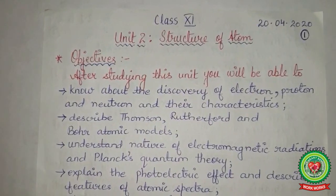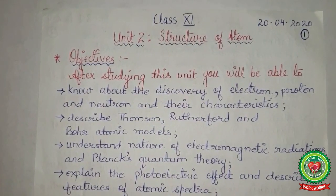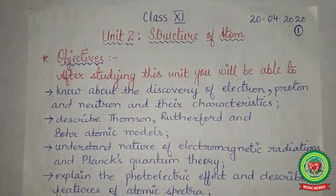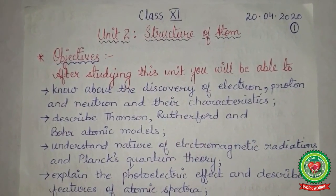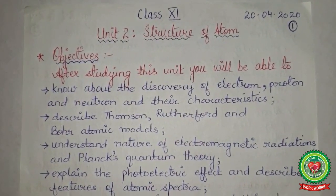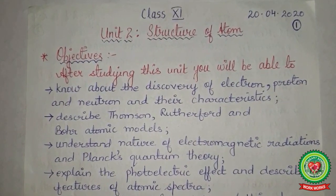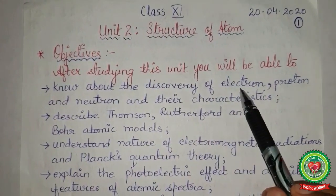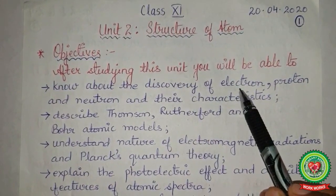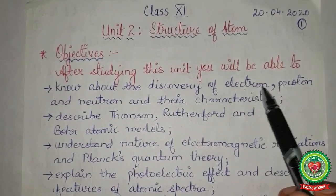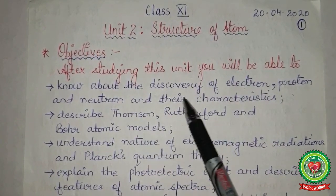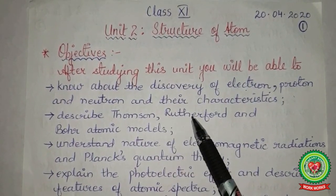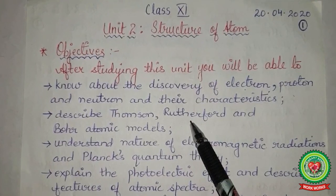Good morning students. Let's start with further discussion of the chapter 'Structure of Atom.' Before we proceed, let's review what we already know: the discovery of the electron with the help of the cathode ray experiment, proton and neutron, their characteristics, and the Thomson and Rutherford models.